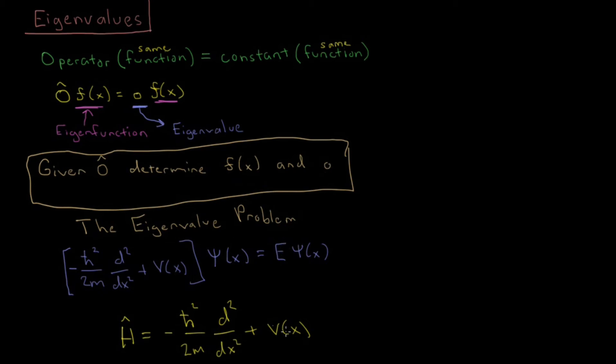So, the potential energy for a given system is going to determine what our Hamiltonian operator is. And then, given our Hamiltonian operator, our challenge is to determine what the wave function and total energy of that given particle is.